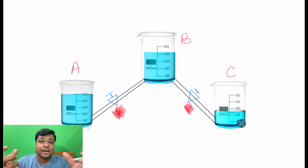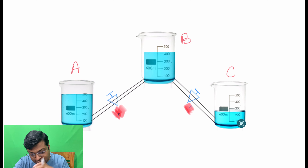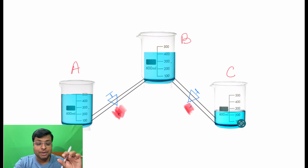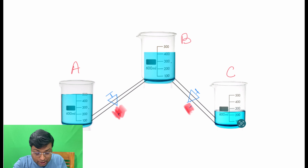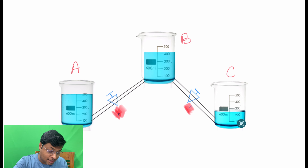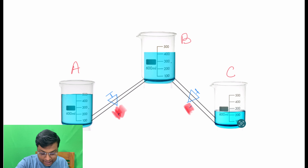Suppose you have three beakers of the same volume — for example, 600 ml for all three beakers — placed on the same table. You put different volumes of water in each: 500 ml in beaker A, 400 ml in beaker B, and 250 ml in beaker C.